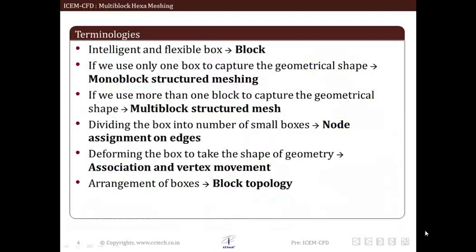Let us have a gist of terminologies used in this approach. The most important term is block. As of now, we have understood block is nothing but an intelligent and flexible box which can be deformed in any way to take shape of geometry. If we use only one block to capture geometrical shape, this is termed as monoblock structured meshing approach. If we use more than one block, it is termed as multi-block structured meshing approach.